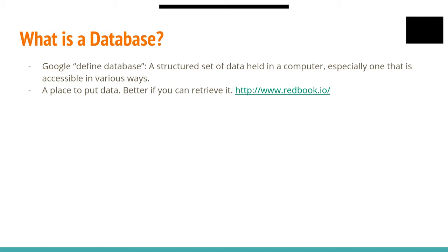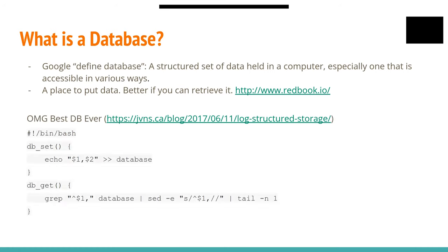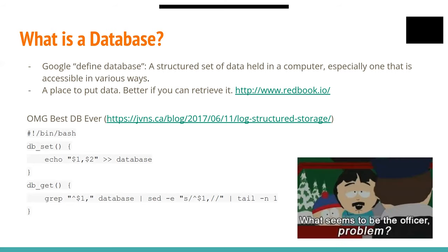I myself am not an academic database expert — I've never written a database, I just have lots of experience working with developers and databases. So let's try to build our own database, starting from this amazing database defined in bash. It has basically two functions: a set function that accepts a key and value, and a get function that accepts a key and returns the last value for that key in the file. Clearly this is not a very good database — what do you think is the problem?